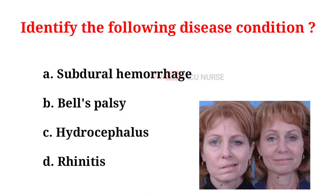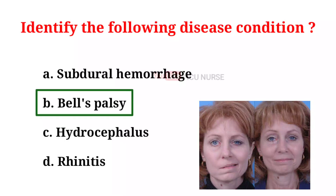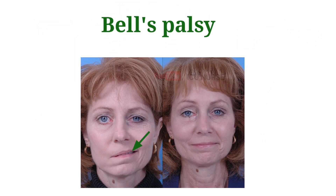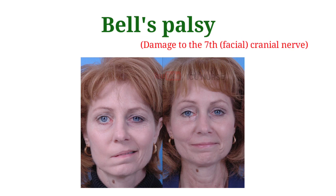Identify the following disease condition. A. Subdural hemorrhage. B. Bell's palsy. C. Hydrocephalus. D. Rhinitis. And the correct answer is B. Bell's palsy. Bell's palsy is an unexplained episode of facial muscle weakness or paralysis that begins suddenly and worsens over 3 to 5 days. This condition results from damage to the 7th cranial nerve, and pain and discomfort usually occurs on one side of the face or head.